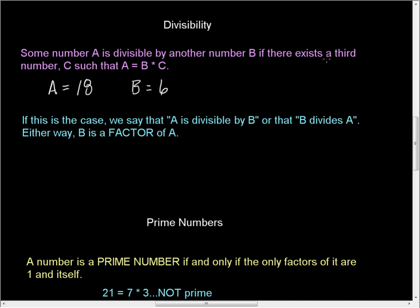If there exists a third number C. Now, the exist part is kind of funny because it doesn't really say that you can find it easily. It just says it's there. So, some number A is divisible by another number B if there exists a third number C such that A is equal to B times C.